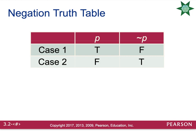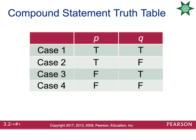This table is just a summary of what we just stated. Your statement has two cases: it can either be true or false. If your statement is true, the negation will be false. If your statement is false, the negation will be true. If you have a compound statement, that means you have two phrases connected together, and there are four cases: both true, first true and second false, first false and second true, or both false. This comes into play when we do truth tables for conjunction and disjunction.